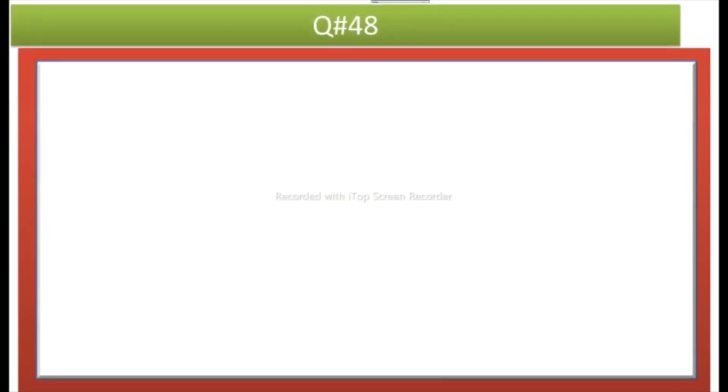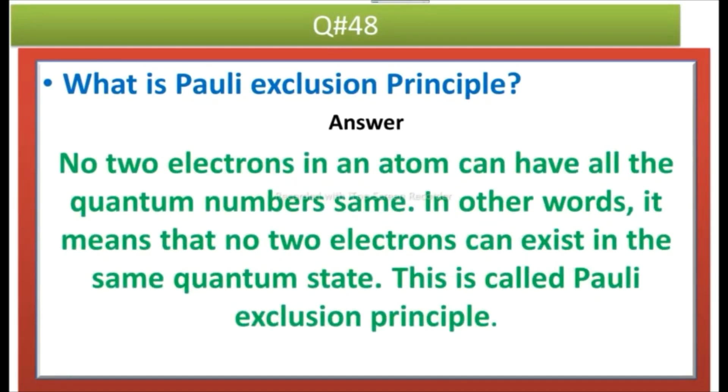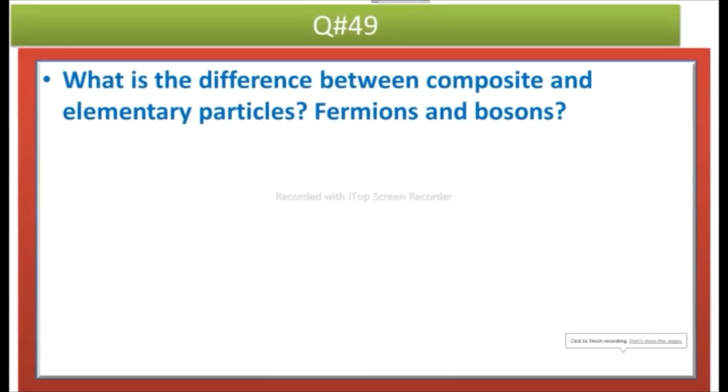The next question is what is Pauli exclusion principle? Answer: No two electrons in an atom can have all the quantum numbers same. In other words, it means that no two electrons can exist in the same quantum state. This is called Pauli exclusion principle.